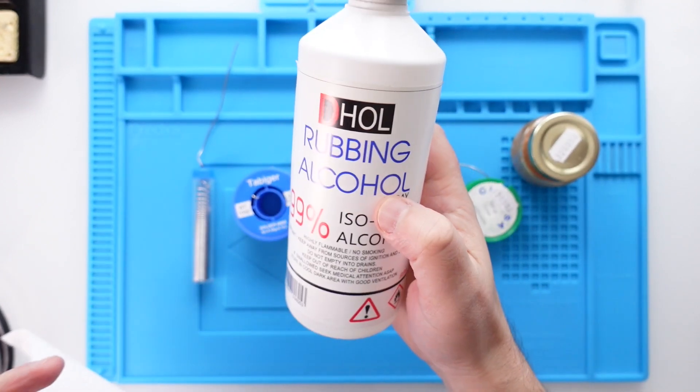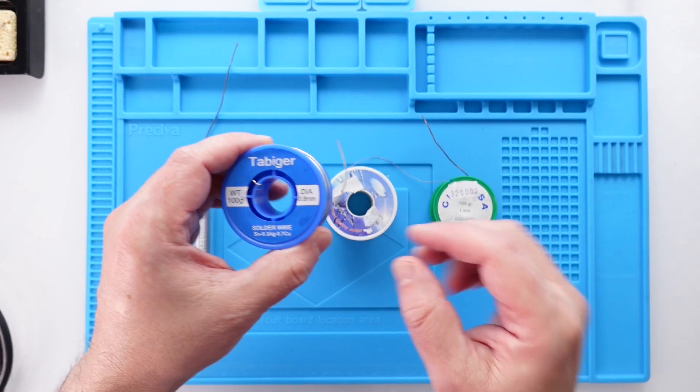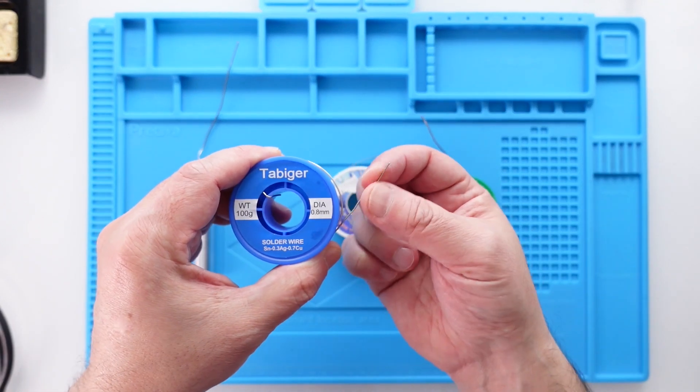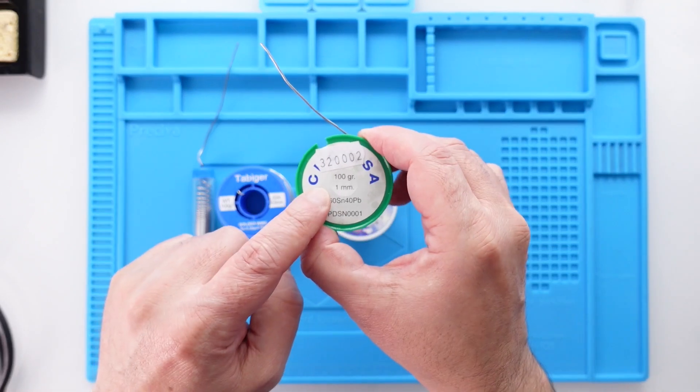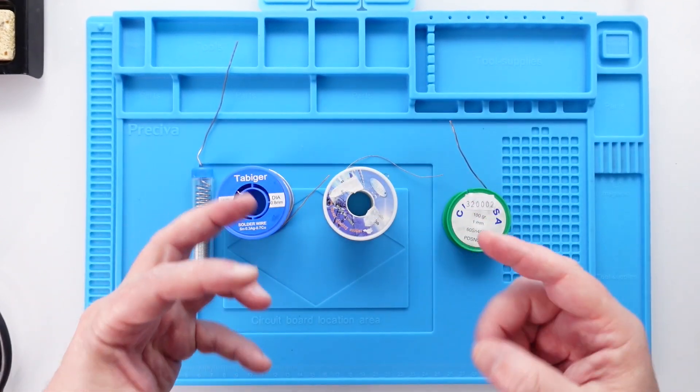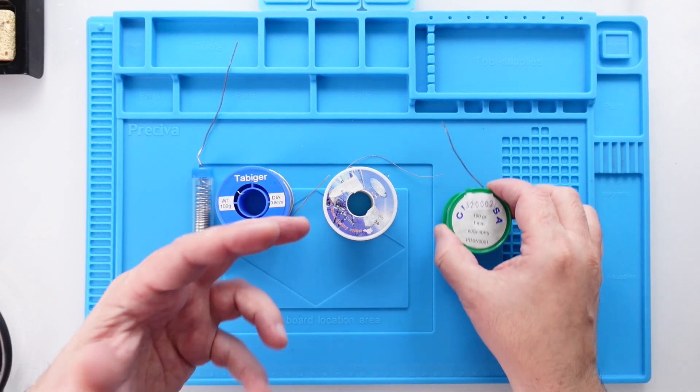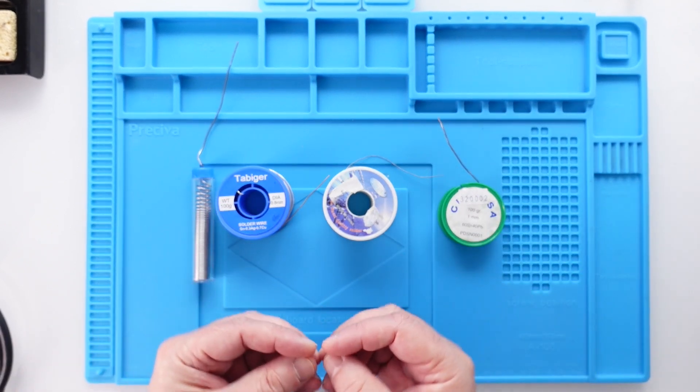By alcohol I mean something like rubbing alcohol, not the drinking kind. You also have to take into consideration the diameter of the solder. This one is 0.8mm, this one is 1mm. It's important because when you're using the soldering iron you don't want to feed too much solder in a particular situation, so you can control the amount that you're using.